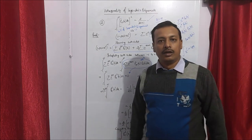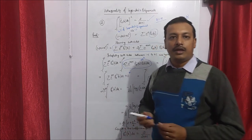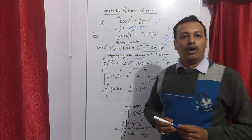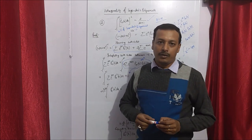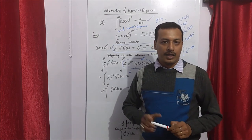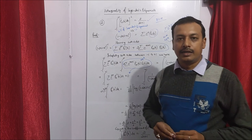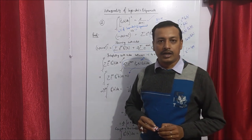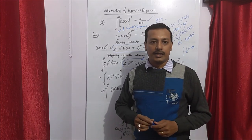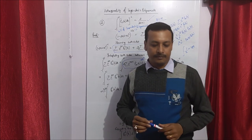Comparing the coefficient of z to the power 2n on both sides: on the RHS we have 2 divided by 2n plus 1, and on the LHS we have the integral from minus 1 to plus 1 of Pn(x) squared dx. Therefore, the integral from minus 1 to plus 1 of Pn(x) squared dx equals 2 divided by 2n plus 1. This is the orthogonal property of Legendre Polynomial. The last topic remaining is the Recurrence Relation, which will be covered in the next class.